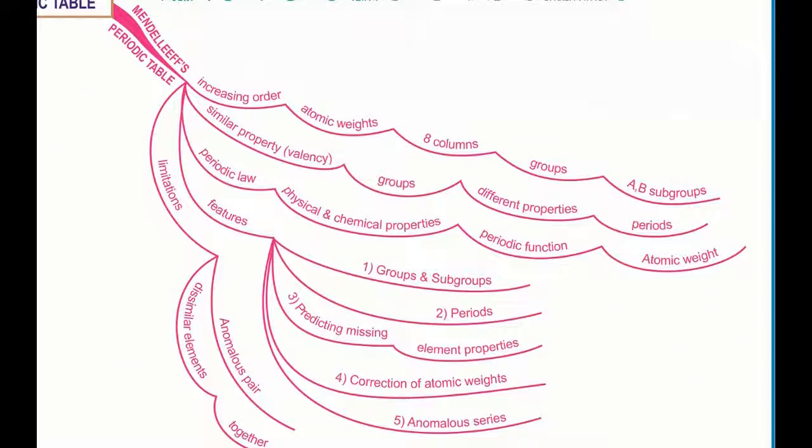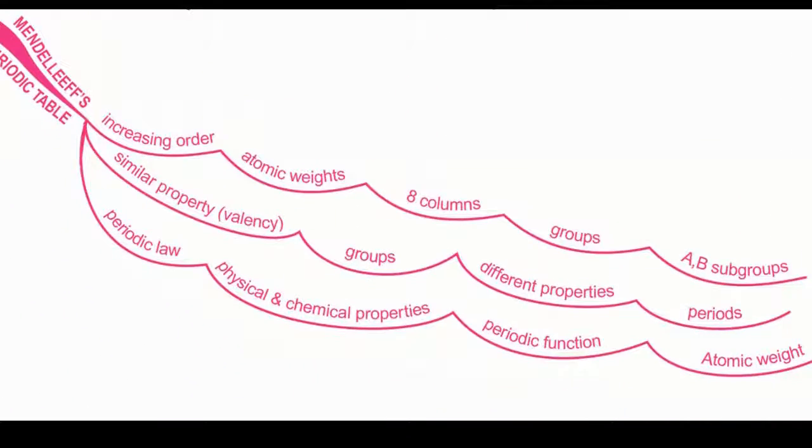Using these keywords, we'll see the concept of Mendeleev's periodic table. He arranged elements in the increasing order of their atomic weights in eight columns called groups and divided each group into A, B subgroups.